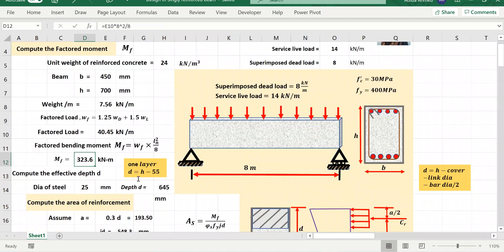Now before finding the reinforcement we have to compute the effective depth. So in this case we have to know if we consider one layer of steel. Why one layer of steel? Because this beam is 450. So this beam is quite wide. So we can assume that we will use one layer of steel.